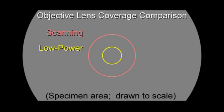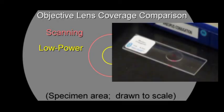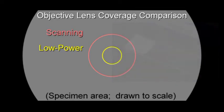This graphic shows the area of a slide that each objective covers which helps to understand how it is used. The gray section represents the specimen area on a prepared slide. Shown to scale, the areas seen through the scanning and low power objectives cover large portions of the specimen area. These enable you to find an organism quickly.